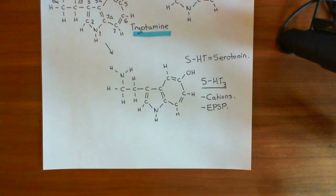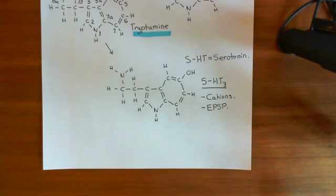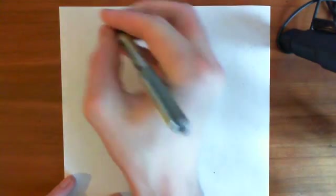We've discussed two examples of cis-loop ligand-gated ion channels, namely the nicotinic acetylcholine receptor and also the 5-HT3 receptors. Now what we want to do is discuss two final examples, which are the GABA-A receptor and also glycine receptors. So let's begin with GABA.